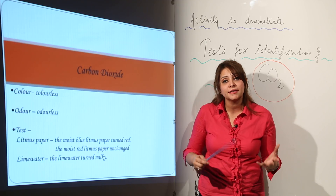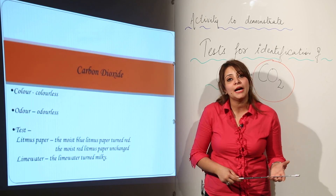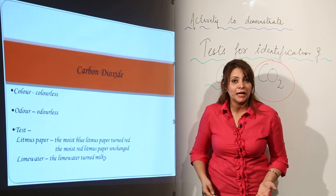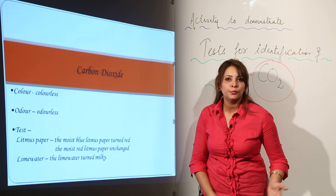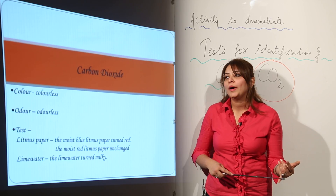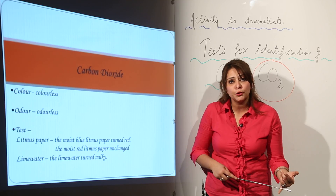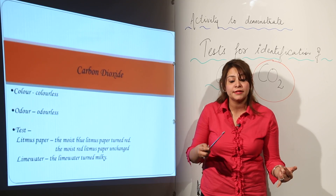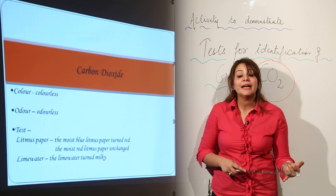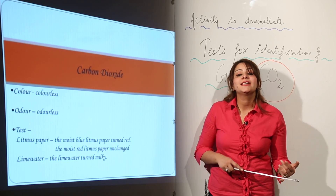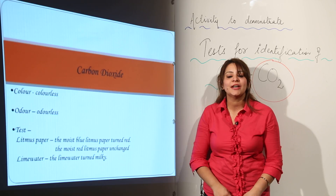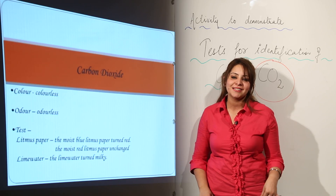So that is also one of the properties of carbon dioxide — it is a non-supporter of combustion. We can identify carbon dioxide by either of these properties: it turns lime water milky, it extinguishes a lighted splinter, and it turns blue litmus paper red. These are the tests that identify the carbon dioxide gas.